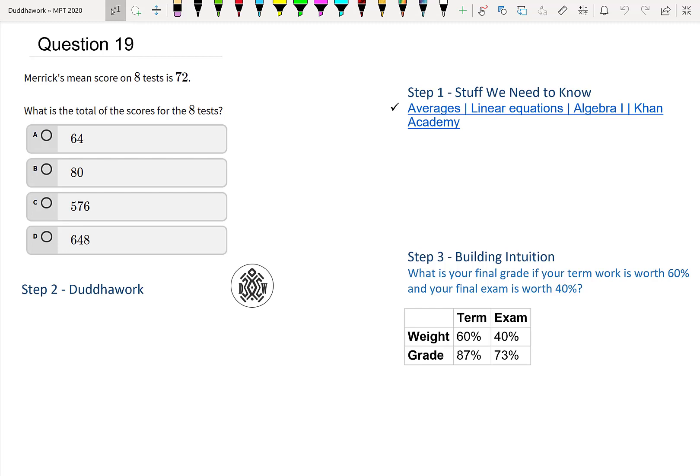Without further ado, let's tackle question 19. We have that Merrick's mean score on eight tests is 72. What is the total of the scores for the eight tests? So in other words, what we're asked here...